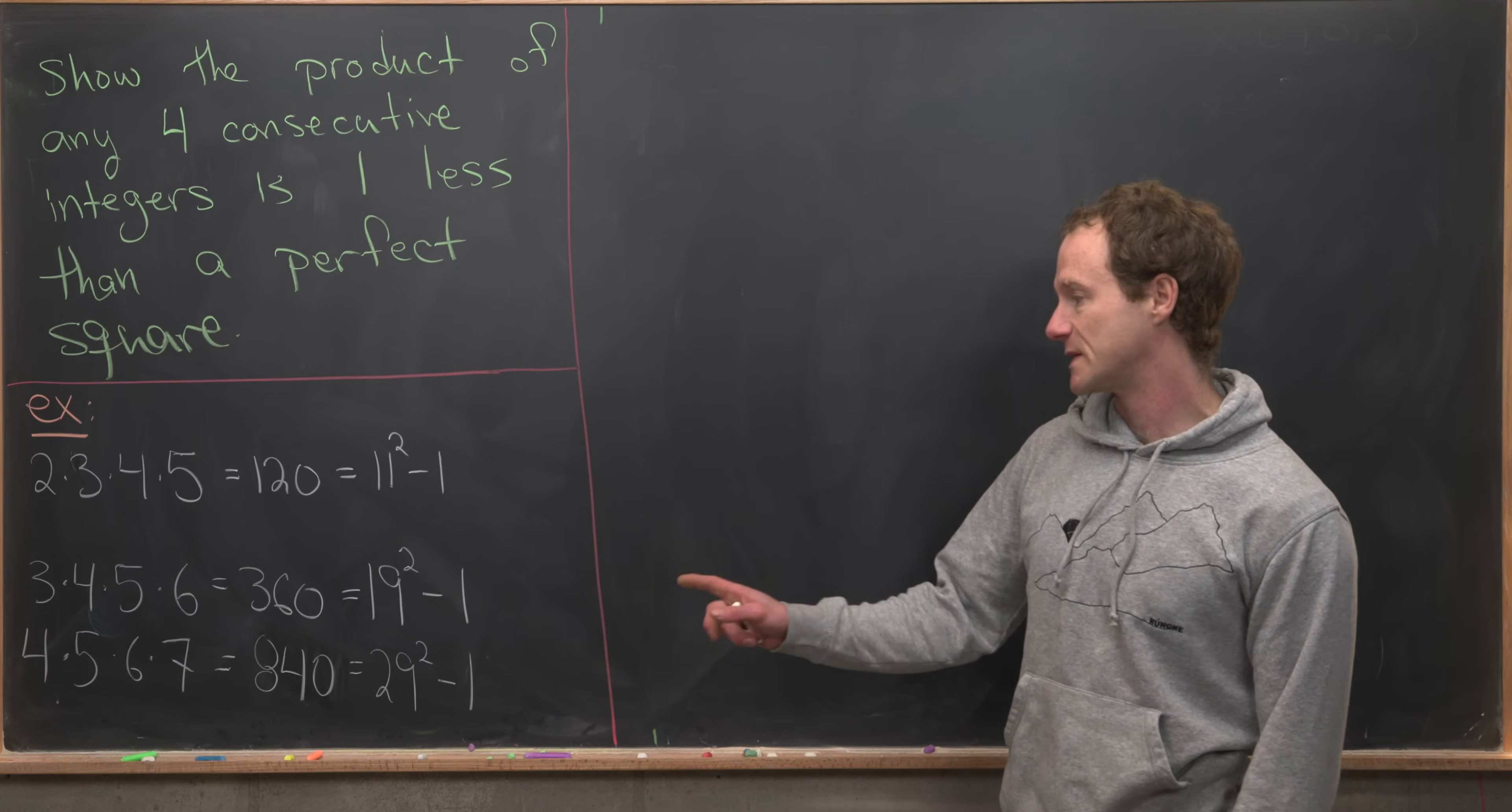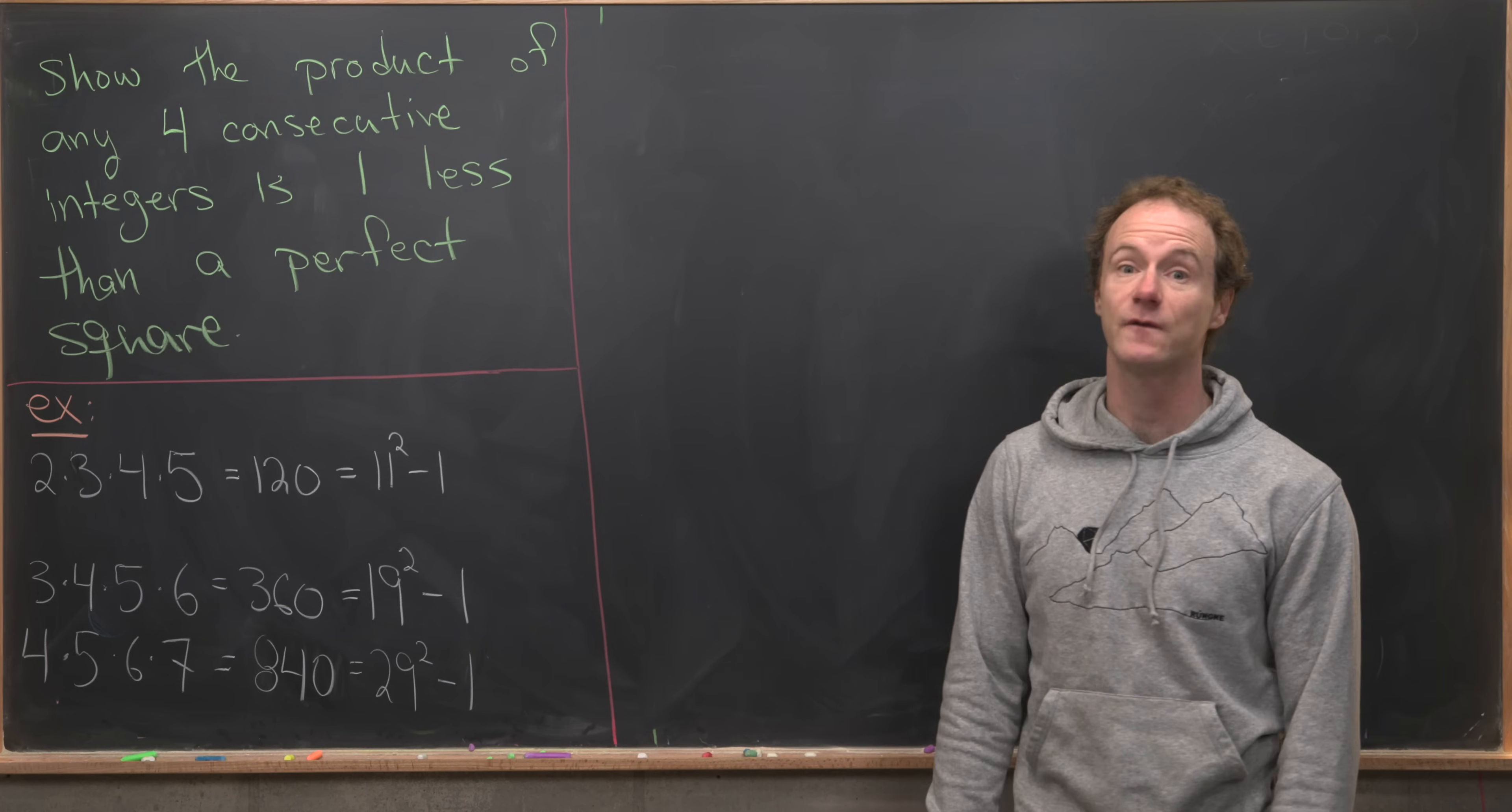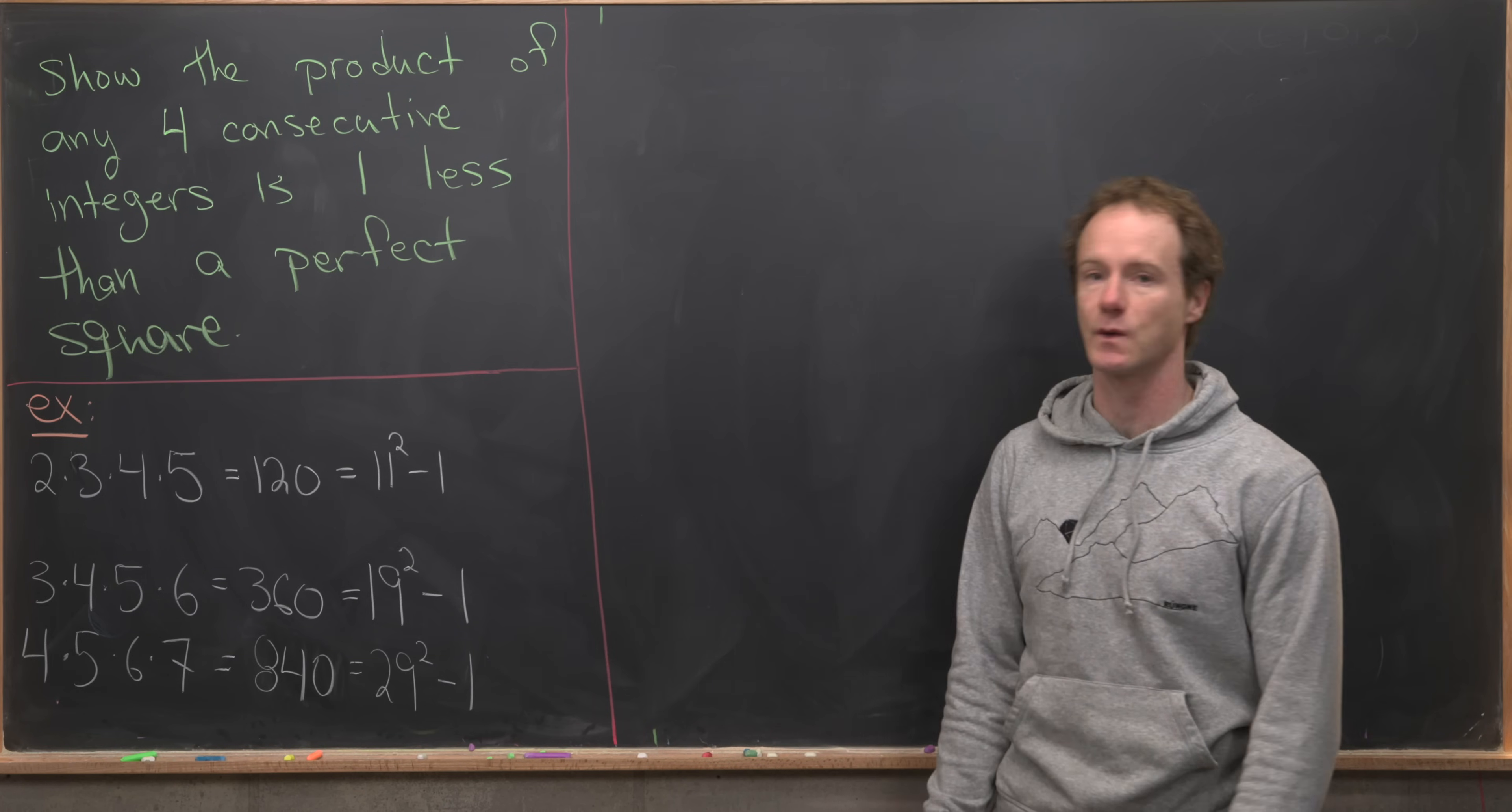And finally, 4 times 5 times 6 times 7 is 840, which is 29 squared minus 1.